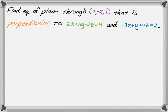We want to find the equation of a plane through the point (3, -2, 1) that is perpendicular to the first plane 2x plus 3y minus 2z equals 4, and the second plane negative 3x plus y plus 4z equals 2.